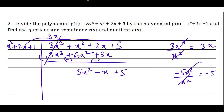Now divide minus 5x² by x², which gives minus 5. Multiply by minus 5: x² into minus 5 is minus 5x². Change the sign — plus into minus gives minus.